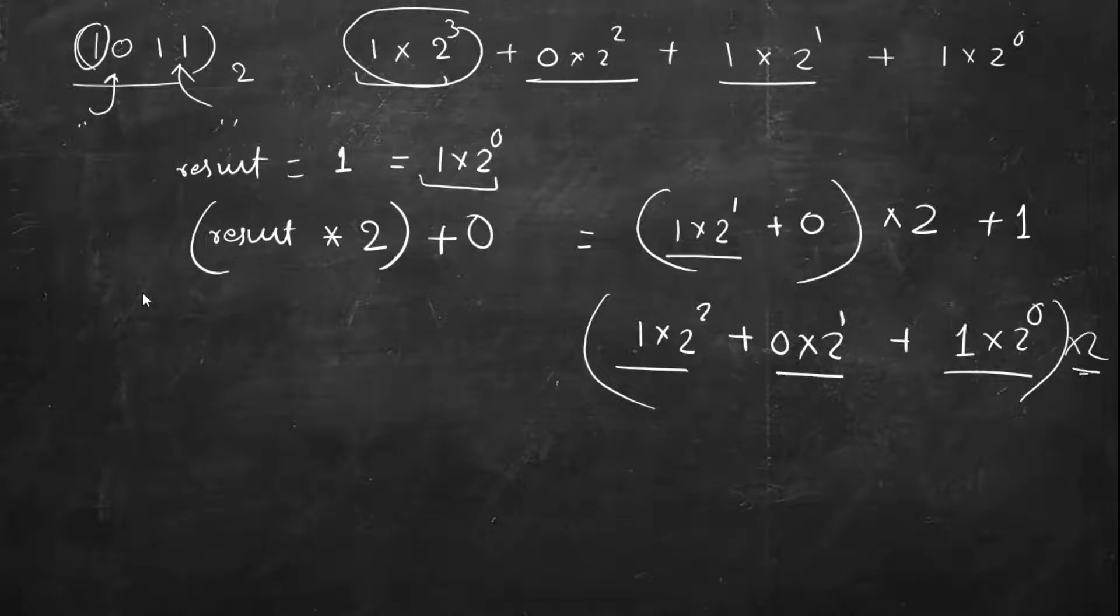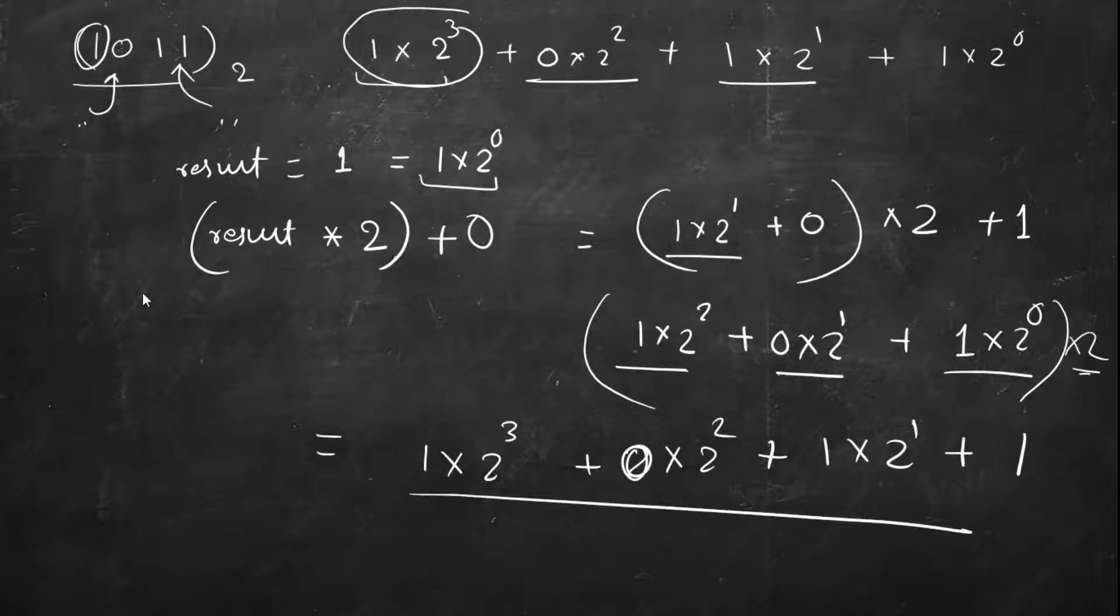Again do the same thing. Last bit - multiply everything by 2, it's equivalent to left shifting. Multiplying by 2, so it becomes 1 multiplied by 2 cubed plus 0 multiplied by 2 squared plus 1 multiplied by 2 power 1 plus 1. Now we get the actual result. So how are we doing this?